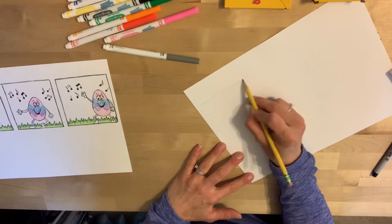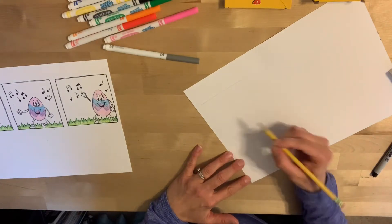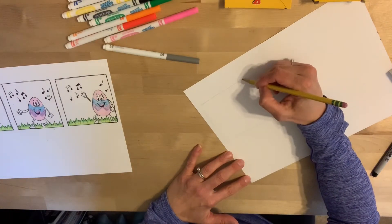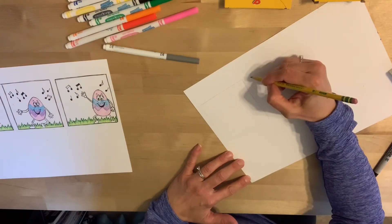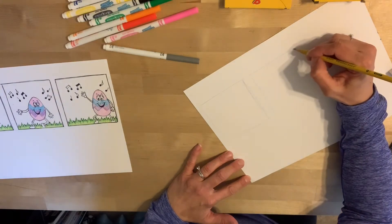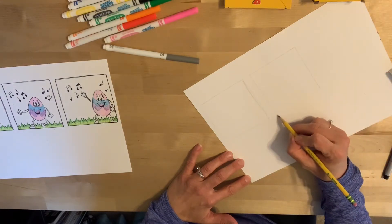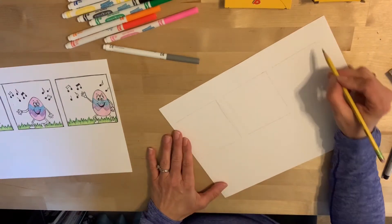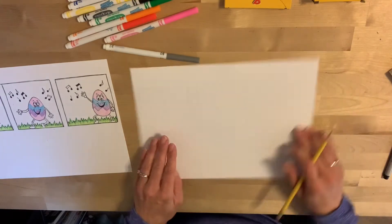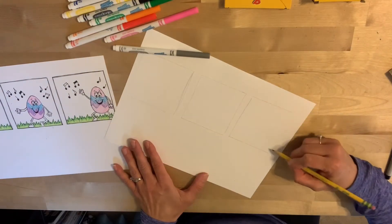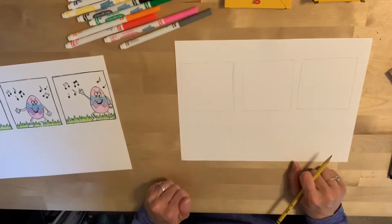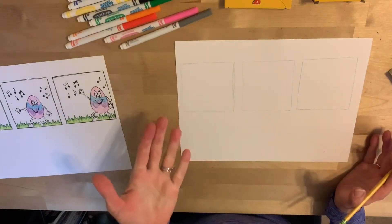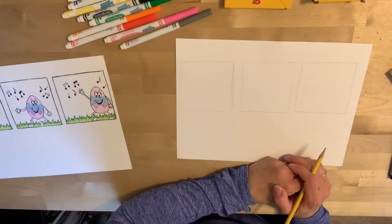And I'm just going to quickly draw mine out. I have a little bit of practice drawing big squares. For you guys, it's a little more difficult, which is why I said to trace something. So there's my three squares. Then I need to decide what I'm going to make my comic strip about.